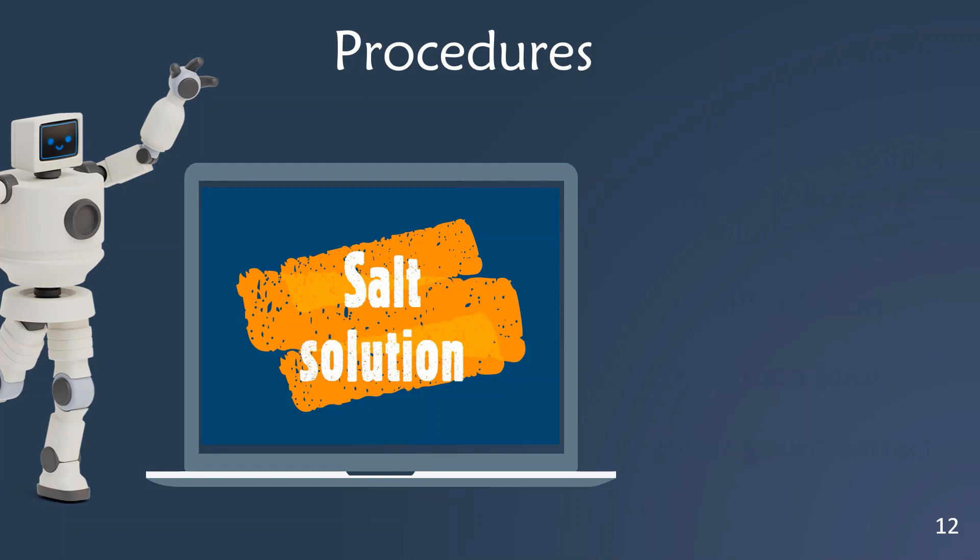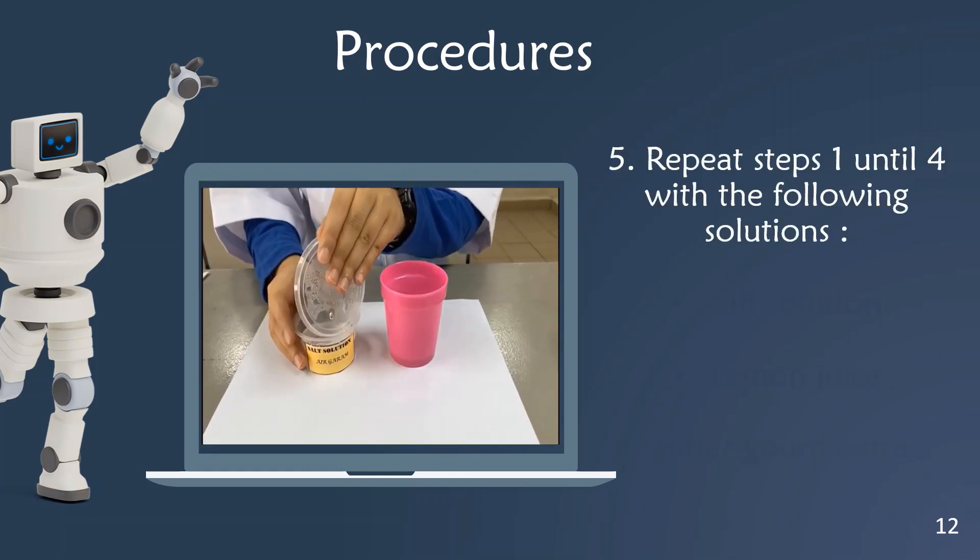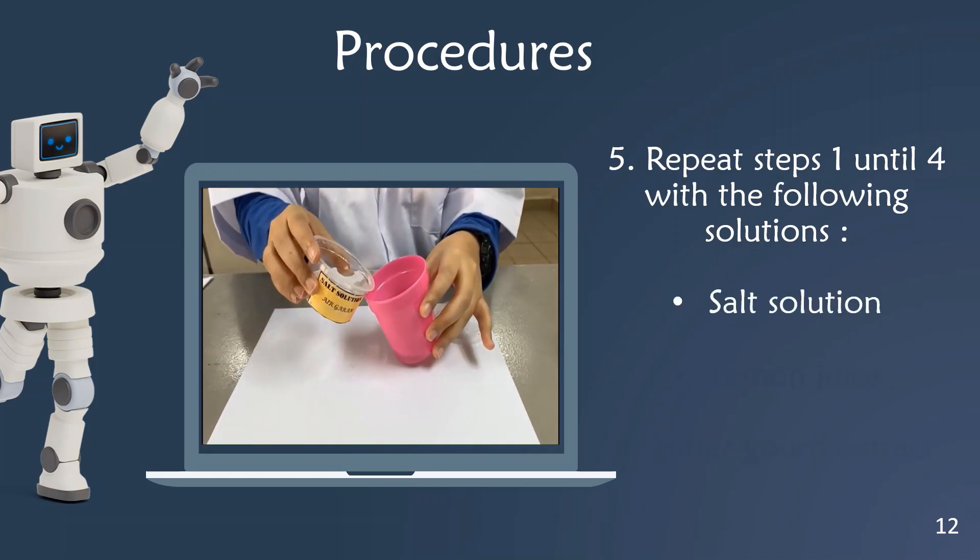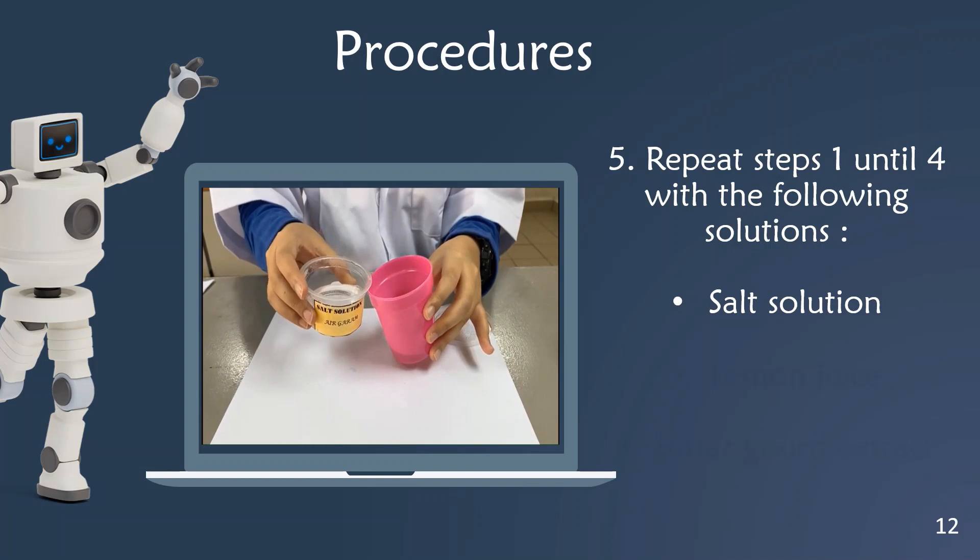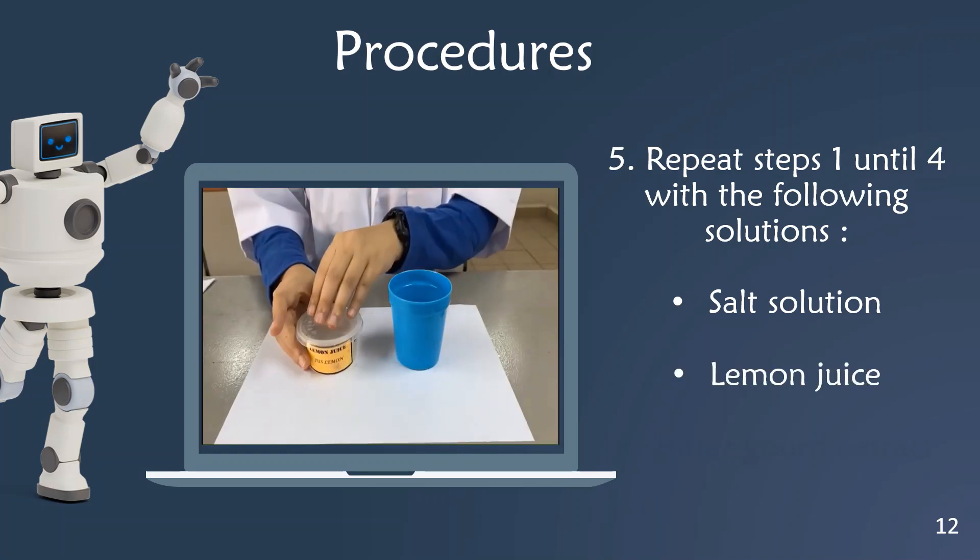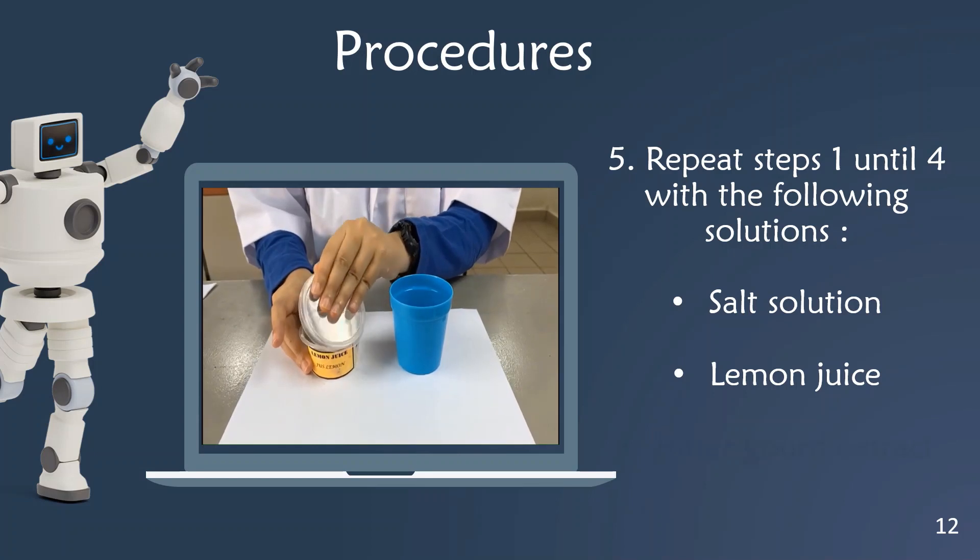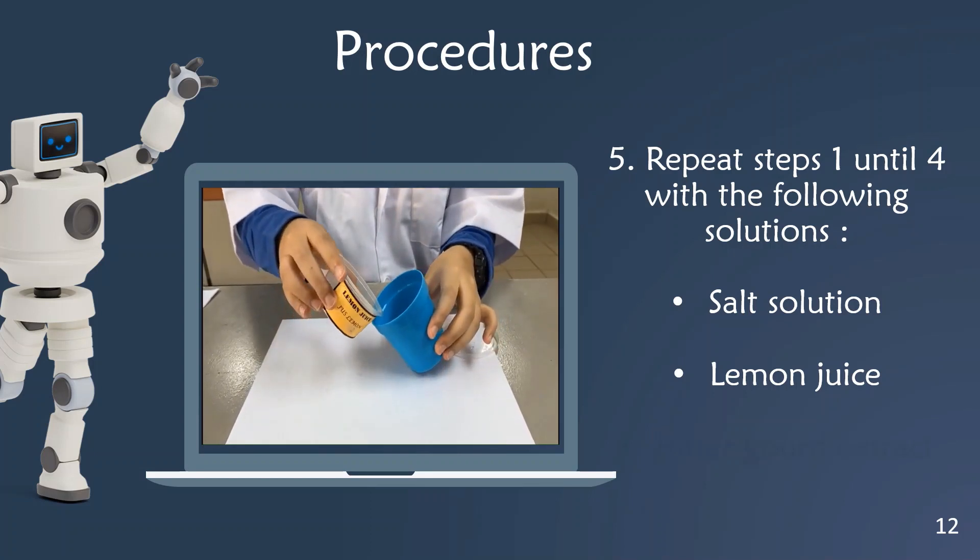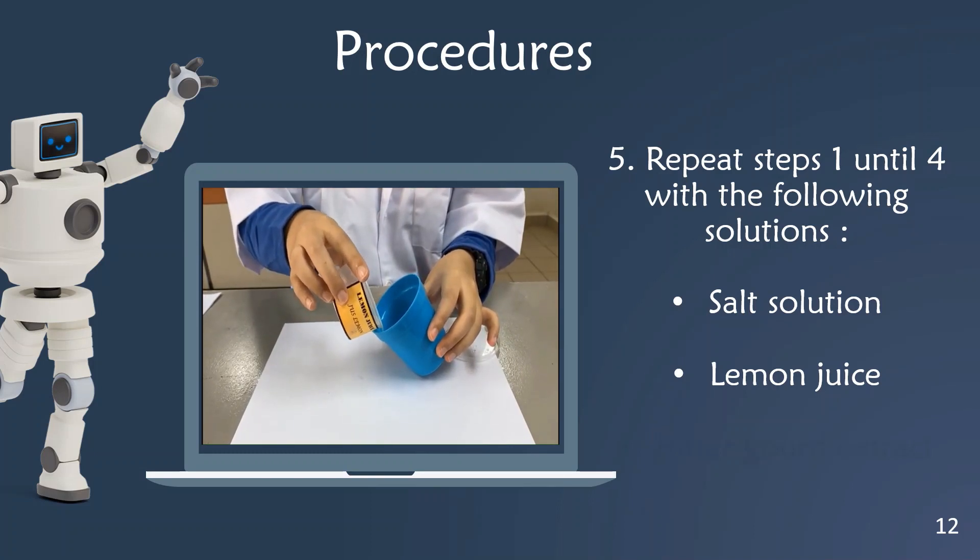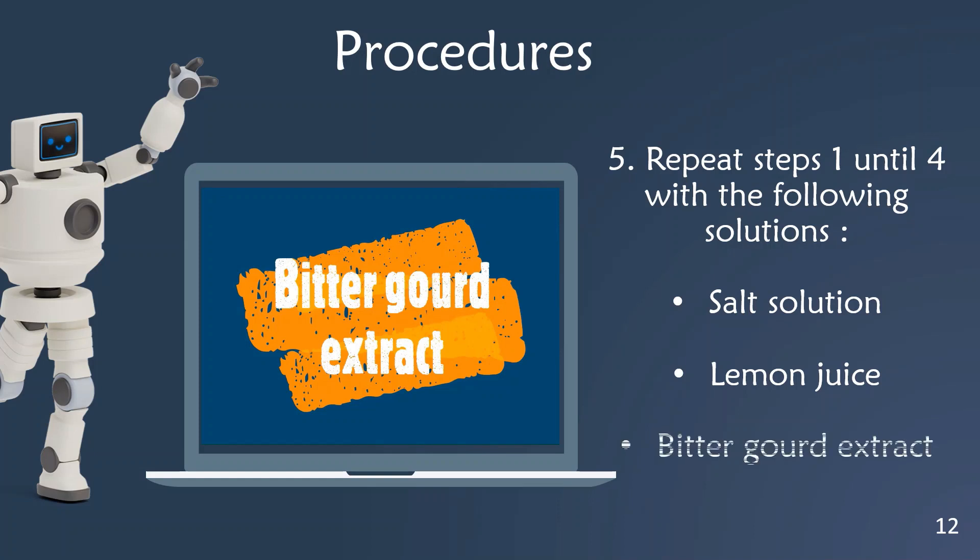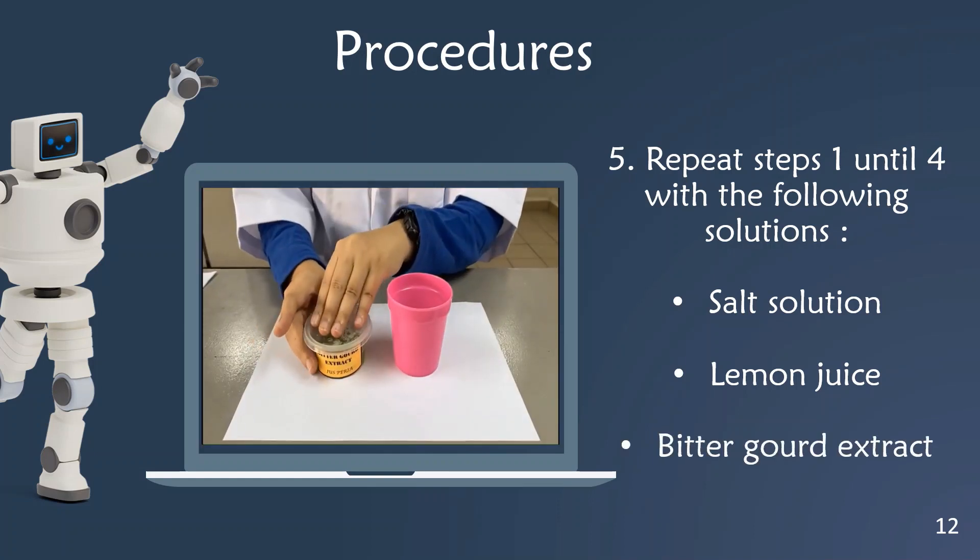Next, repeat step 1 until 4 with the following solutions: the salt solution, the lemon juice, and lastly, the bitter gourd extract.